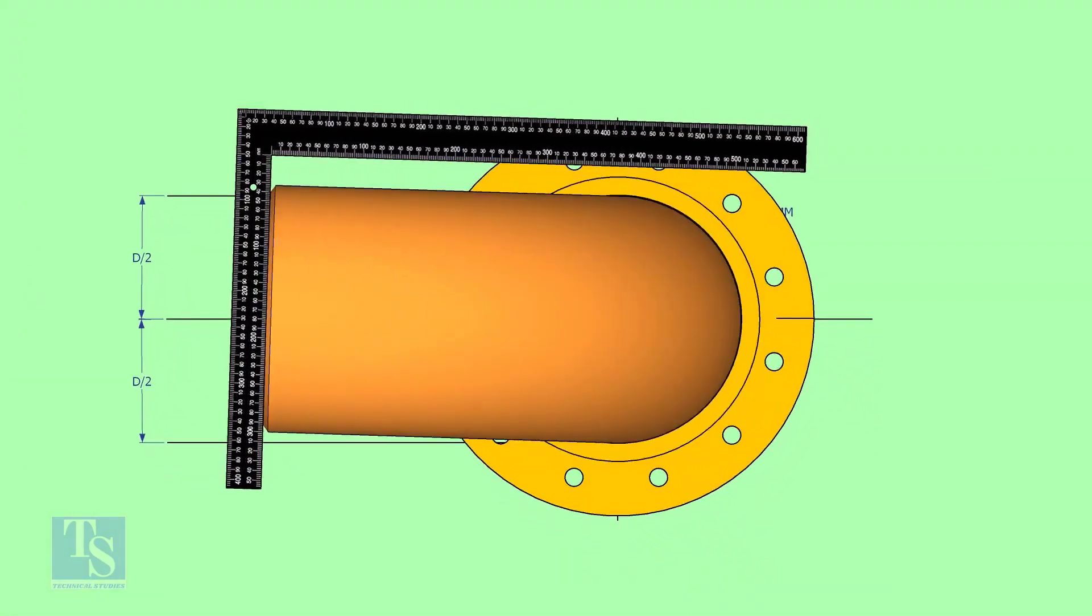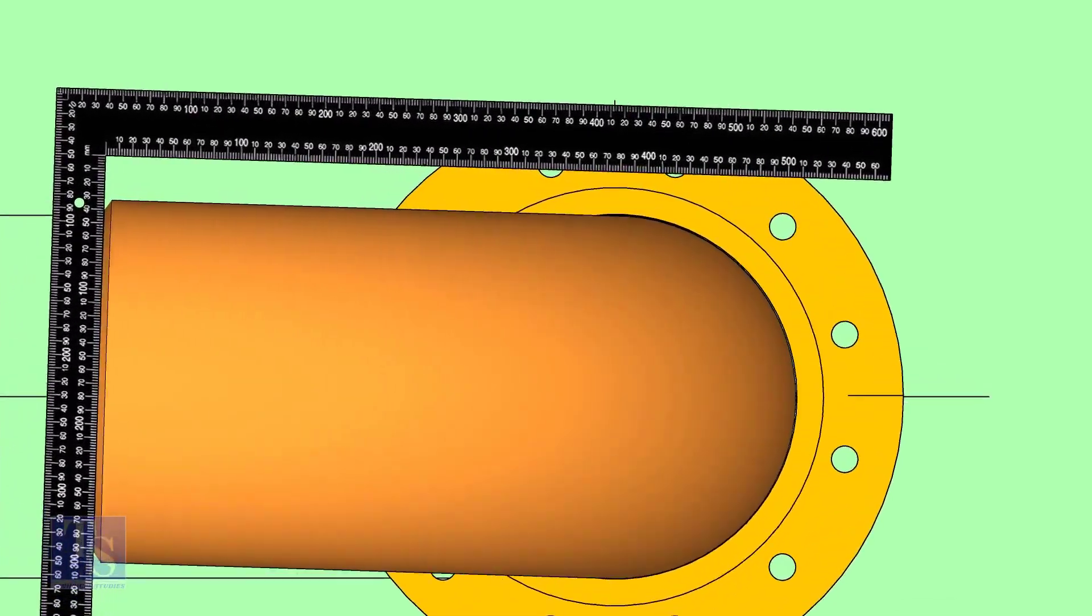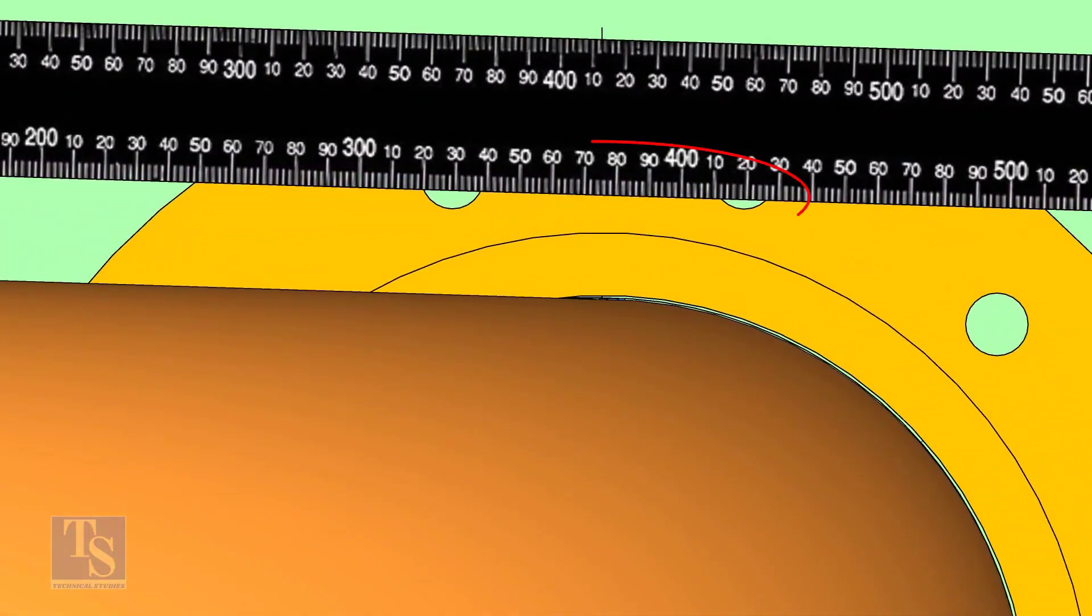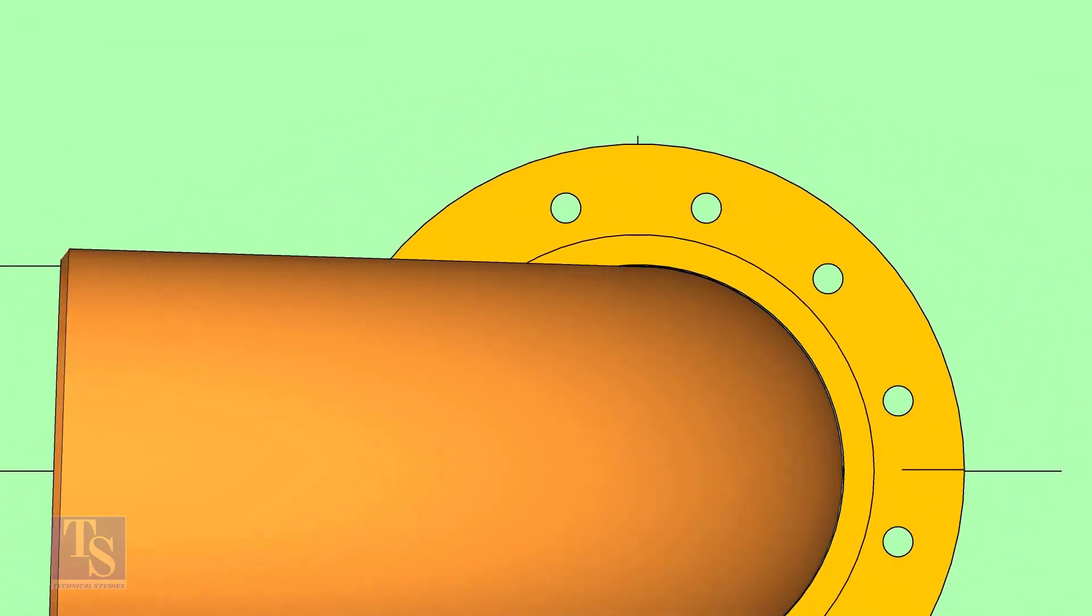Hold a right angle as shown and check if the reducer is turned. In this case, the elbow centerline is not parallel with the centerline of the flange.